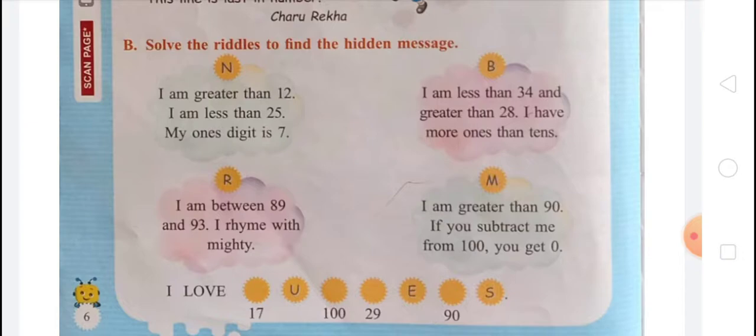Next riddle: I am greater than 90. If you subtract me from 100, you get 0. The numbers greater than 90 are 91, 92, 93, 94, 95, 96, 97, 98, 99, 100. When we subtract 100 from 100, that is 0. So the answer is 100.